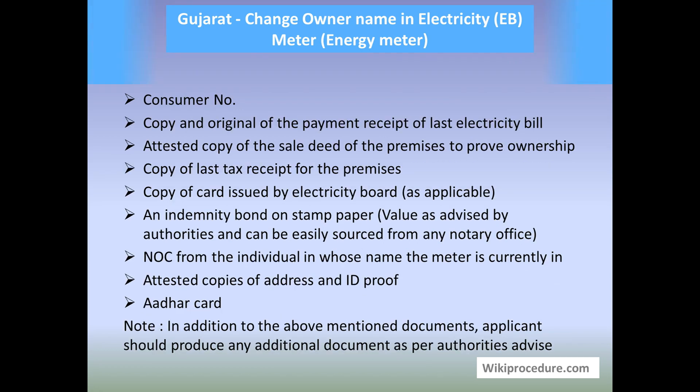Let us see the documents required. You need the consumer number, copy and original of the payment receipt for the last electricity bill, attested copy of the sale deed of the premises to prove ownership, copy of last tax receipt for the premises, copy of card issued by the electricity board as applicable, and an indemnity bond on stamp paper. The value of the stamp paper will be given by the authorities of the respective board, and you can reach a notary office for getting this.